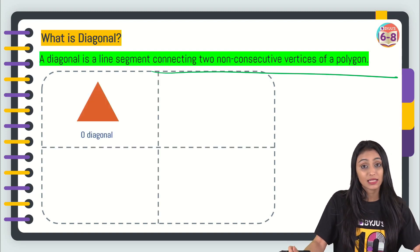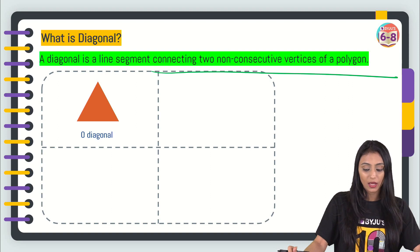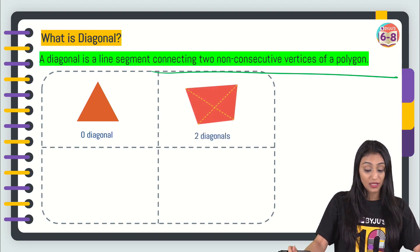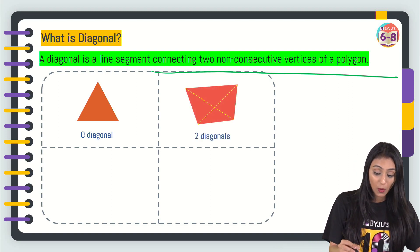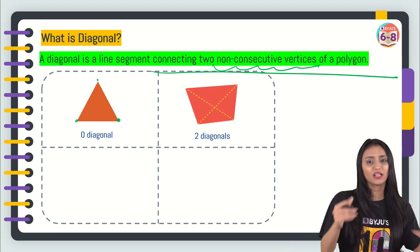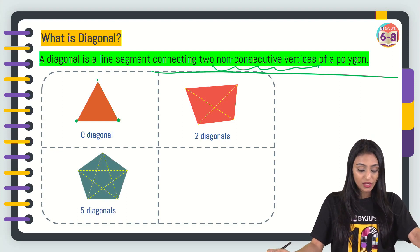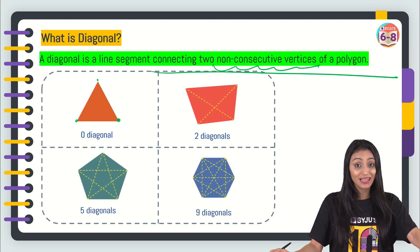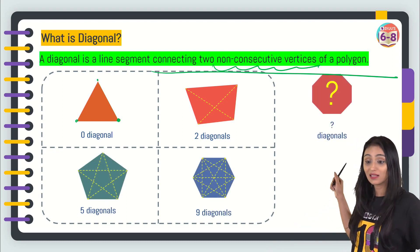We have this three-sided polygon here, there would be zero diagonals. In this four-sided, there would be two diagonals because we are talking about connecting two non-consecutive ones. Here all of them are consecutive. Consecutive means coming one after the other. In this one, there are five diagonals and in this one, there are nine diagonals. Can you guess the number of diagonals in this one?